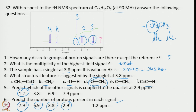With this information we have to identify the molecule. We can calculate the hydrogen deficiency index: 11 minus 6 equals 5. A value of 5 indicates 1 ring plus 4 double bonds. With this information and looking into the 5 different types of signals, there must be an aromatic group, and something like this gives us the structure.